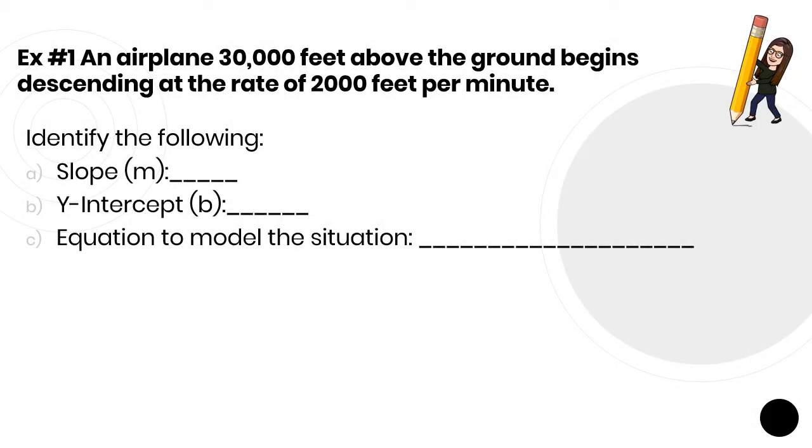We're going to look through three examples and we're just sticking to the basics here. We're talking about an airplane 30,000 feet above the ground, and it begins descending at a rate of 2,000 feet per minute. So the first thing I'm going to ask you to identify is the slope, the m value. So which value is changing or is a rate? Well, in this case, it actually tells you 2,000.